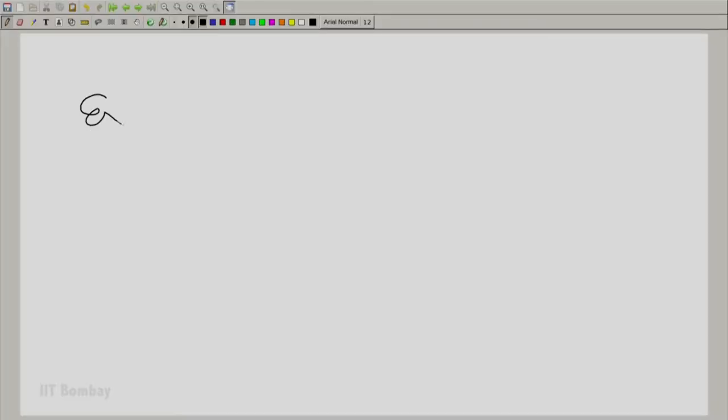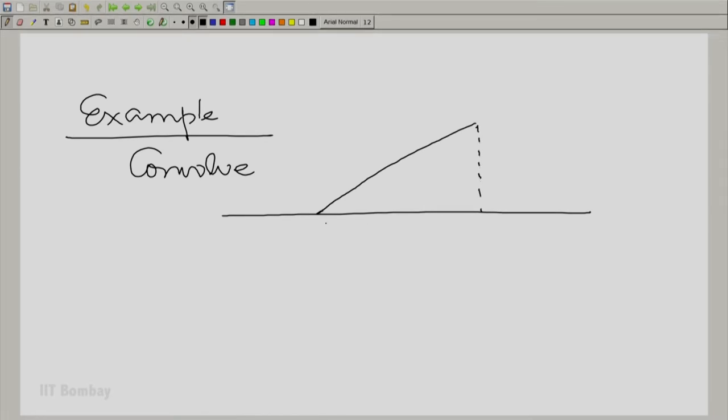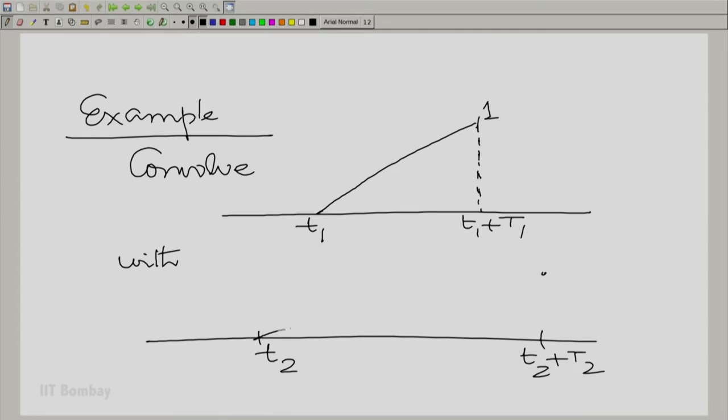For example, suppose we were to try and convolve the following two functions. Let us take an example. Convolve this function, the function that rises from 0 to 1 over an interval of T1, so T1 to T1 plus capital T1, with another function that rises over an interval of T2. Let us call this X1(T) and let us call this X2(T).